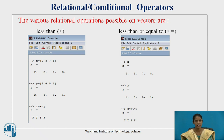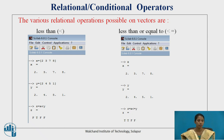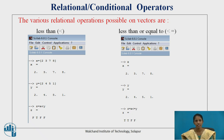Next is the less than or equal to operator. Using the same vectors x as 2, 3, 7, 8 and y as 2, 4, 5, 1, the condition is x less than or equal to y. Here, 2 is less than or equal to 2 — true, because 2 equals 2. 3 is less than or equal to 4 — true, because 3 is less than 4. 7 is less than or equal to 5 — false, so the answer is F.